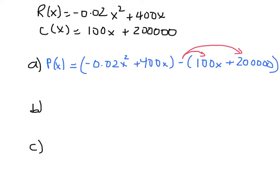So when we do this, there's only one x² term, that's -0.02x². But we do have two x terms: 400x and -100x, and their sum is 300x. And then there's only one constant term. In this case, because of that negative sign, it's -200,000. And this is our profit function.